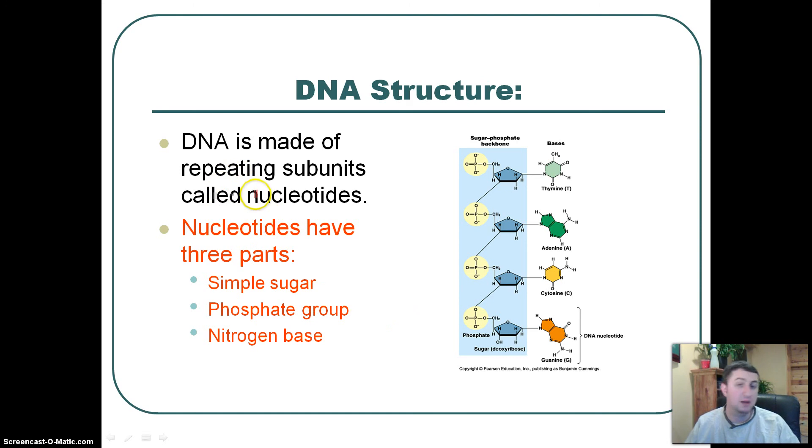DNA is made up of repeating subunits called nucleotides. And those nucleotides have three parts. They have the sugar, the phosphate group, and they have the nitrogen base. Right here that I'm circling here, that's the sugar group, that's the ribose. Right here that I'm circling here, that's the phosphate. And right here is the nitrogen base.